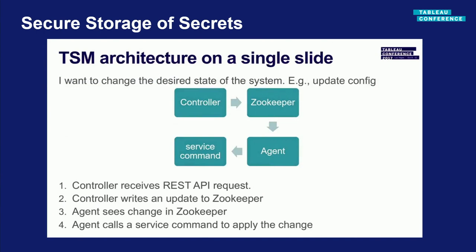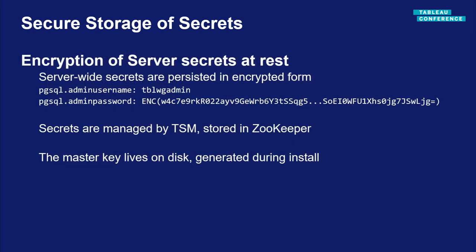Here's a quick digression. If you, as an administrator, want to set a configuration value, you issue a command: TSM configuration set, specifying a key and a value. This is sent to the controller. The controller inspects the data, and if it is a secret, the controller encrypts it, then writes it to Zookeeper — our coordination service. On every server node, the TSM agent process downloads this configuration to disk in encrypted form and copies it to every service on that machine. At runtime, services decrypt this data in memory to use it. A master key is used for encryption and decryption — this lives on disk, not in Zookeeper, so if anyone has access to just Zookeeper alone they cannot decrypt your server secrets. We generate this master key during initial install.